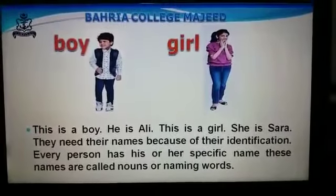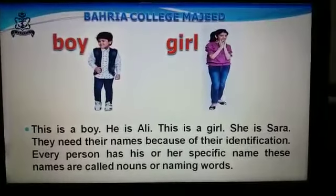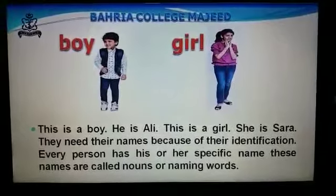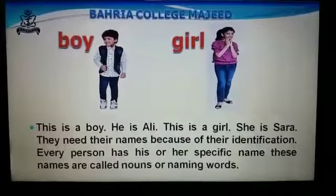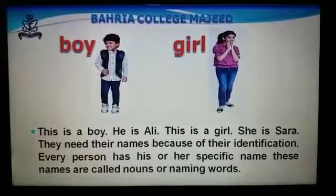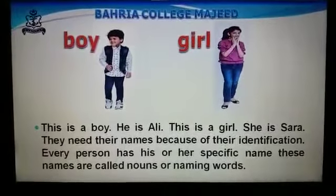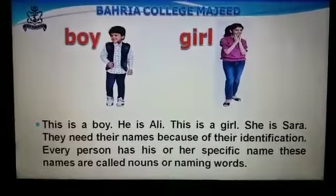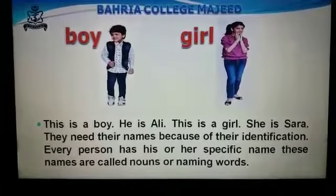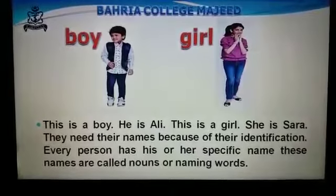Now you can see the pictures on your screen. This is a boy. He is Ali. And this is a girl. She is Sara. They need their names because of their identification. Every person has his or her specific name. These names are called nouns or naming words.